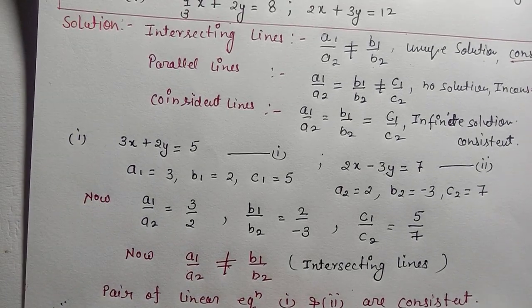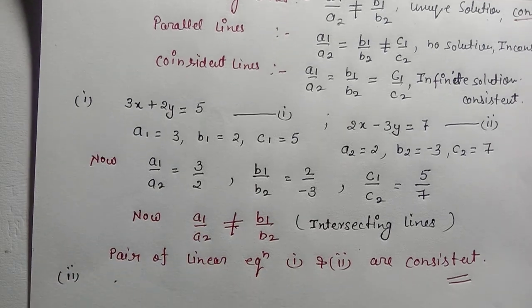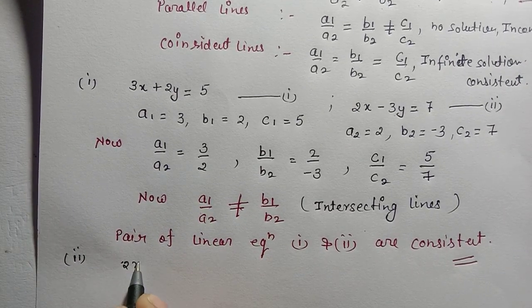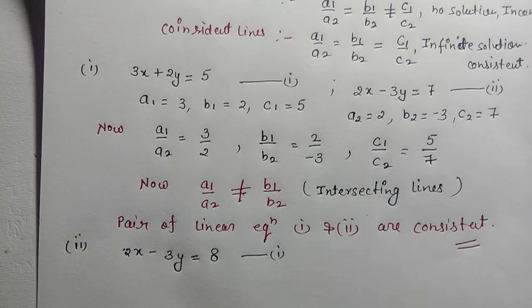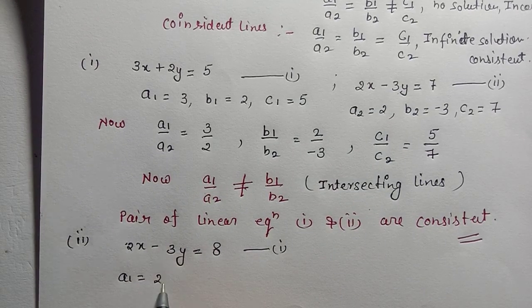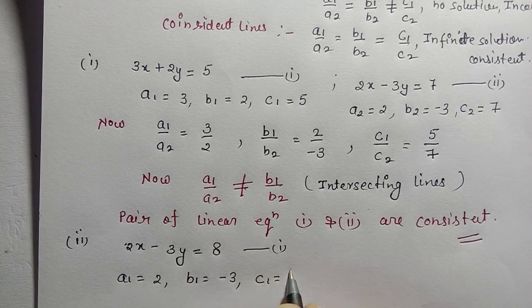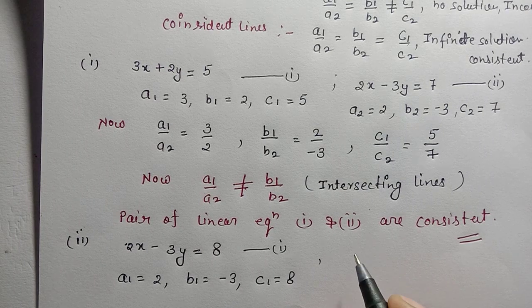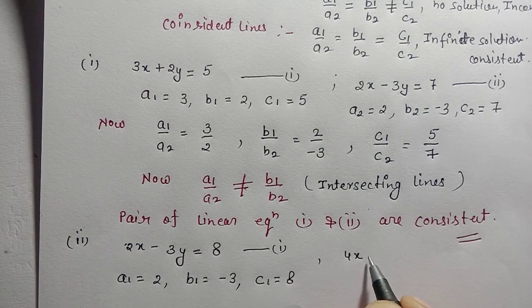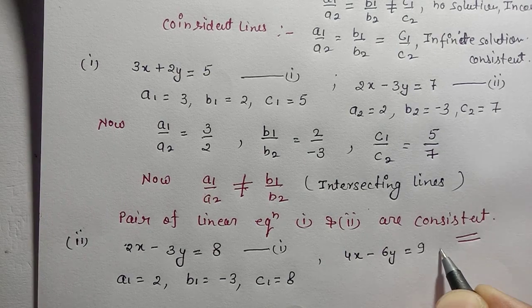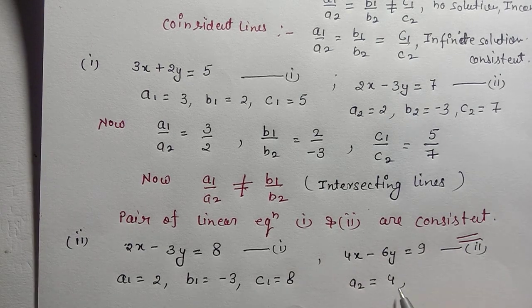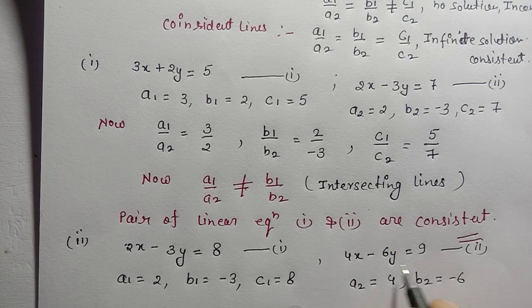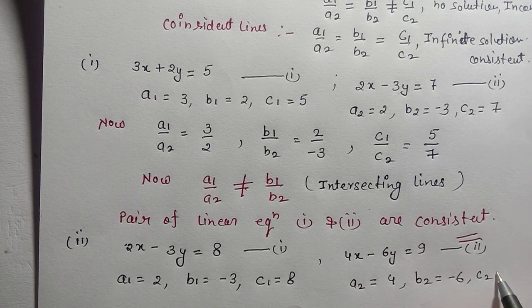Now the second part. The first line is 2x - 3y = 8. So a1 = 2, b1 = -3, c1 = 8. The second line is 4x - 6y = 9. So a2 = 4, b2 = -6, c2 = 9.